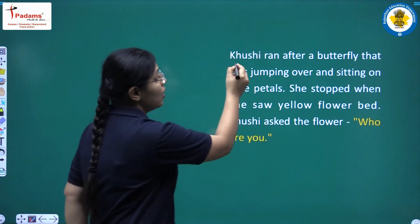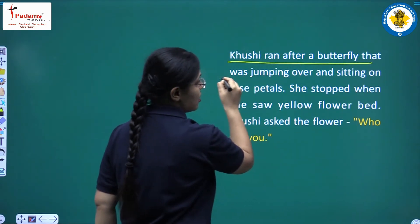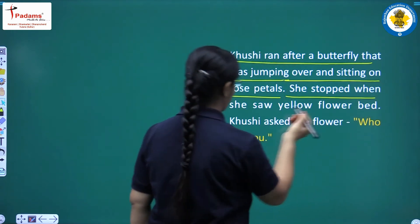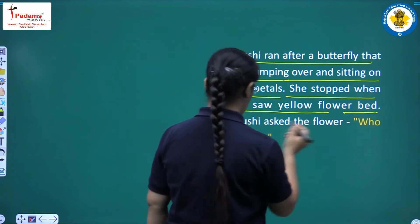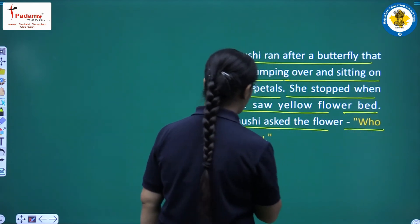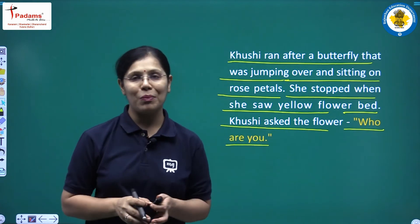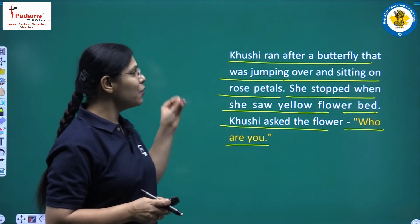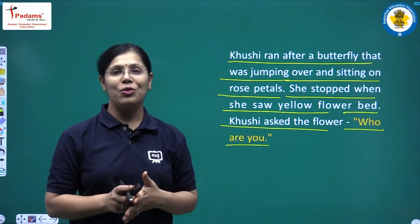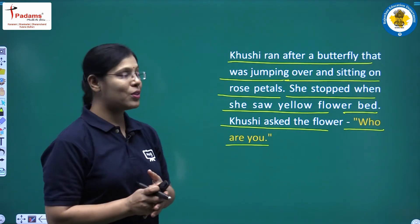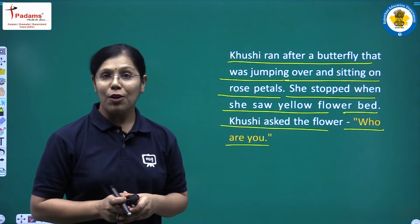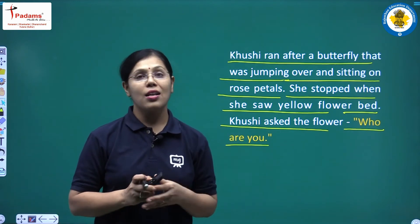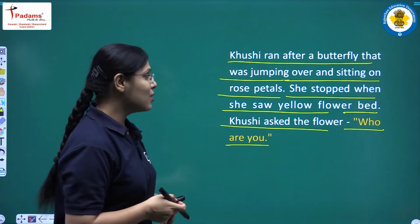Let's move next. Khushi ran after a butterfly that was jumping over and sitting on rose petals. She stopped when she saw a yellow flower bed. Khushi asked the flower, 'Who are you?' Khushi was very excited to see flowers everywhere. She moved from the rose bed to the yellow flower bed and asked those yellow flowers, 'Who are you?'